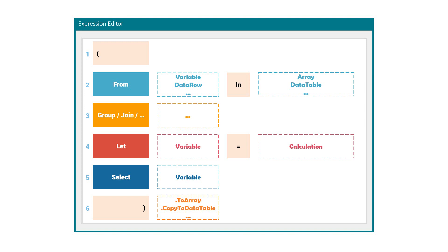Such as 'copy to data table' to select the output as a data table. The query is ready. Now I'm going to show you a few examples of how to implement this query in UiPath.